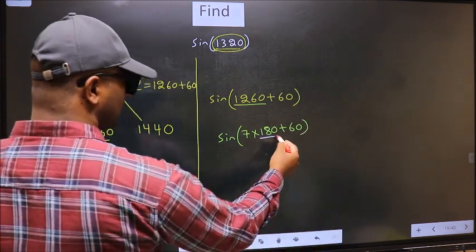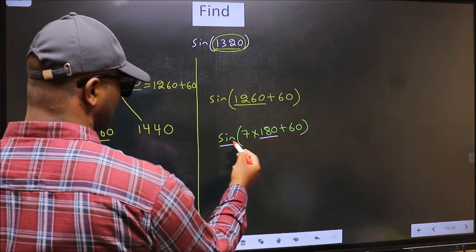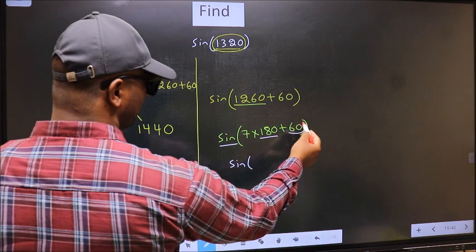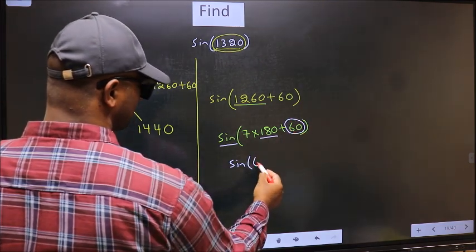Here we have 180. So sine is not going to change. It will remain sine. And inside, we get this angle 60.